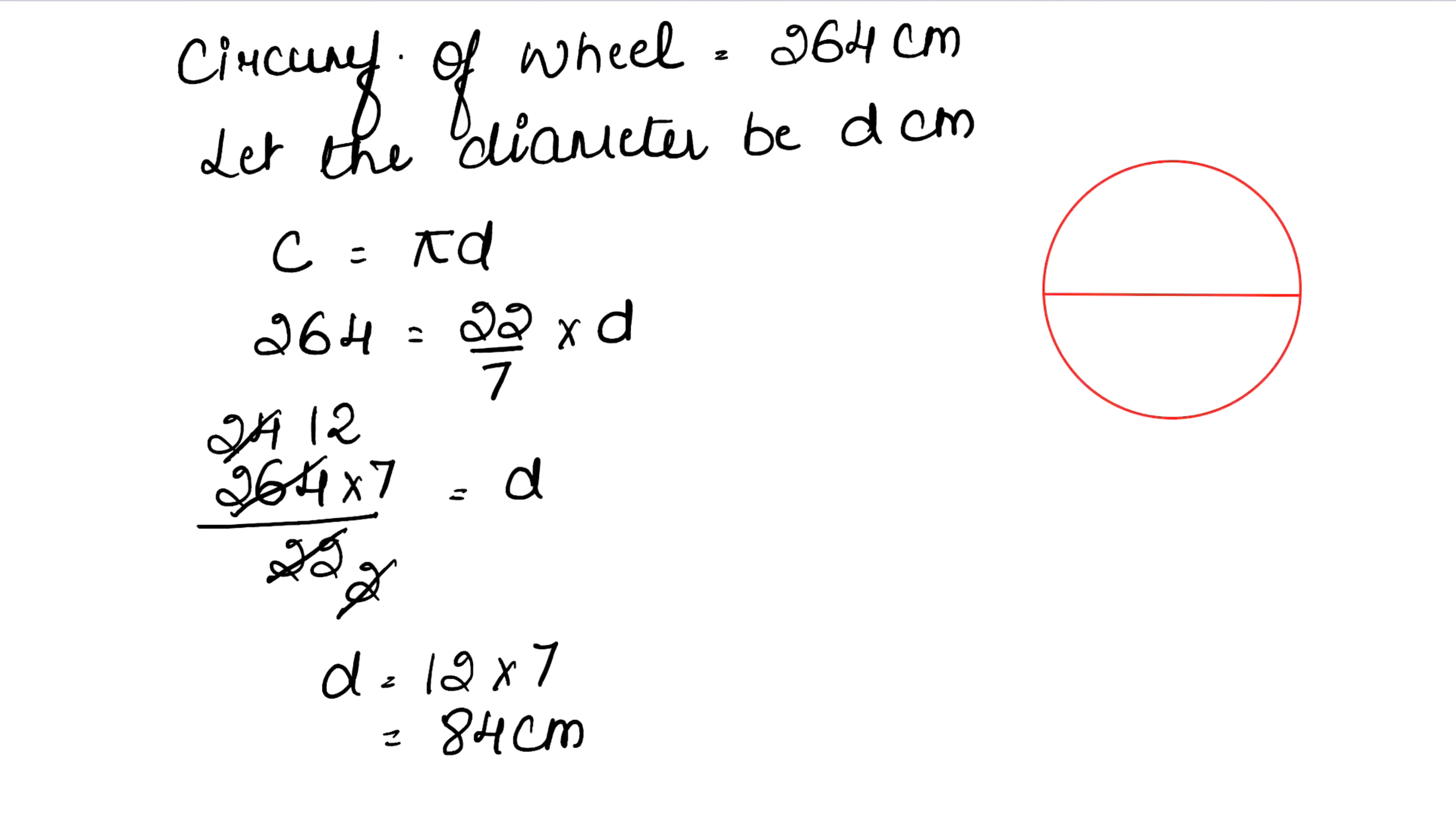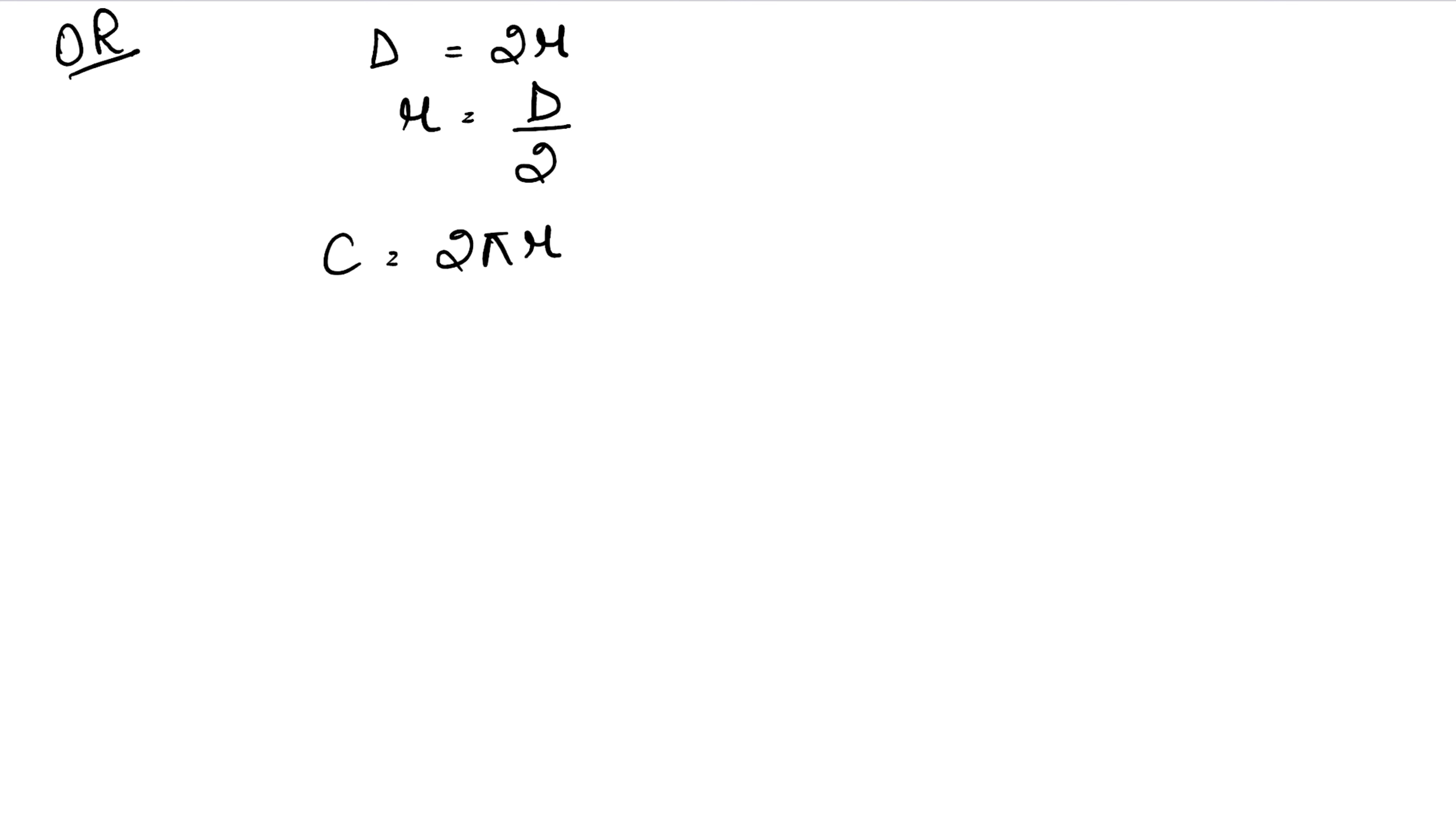Our circumference is 264, so 264 = 2 × 22/7 × r. We will write d/2 for r because the diameter is here and r = d/2. Radius equals d/2.